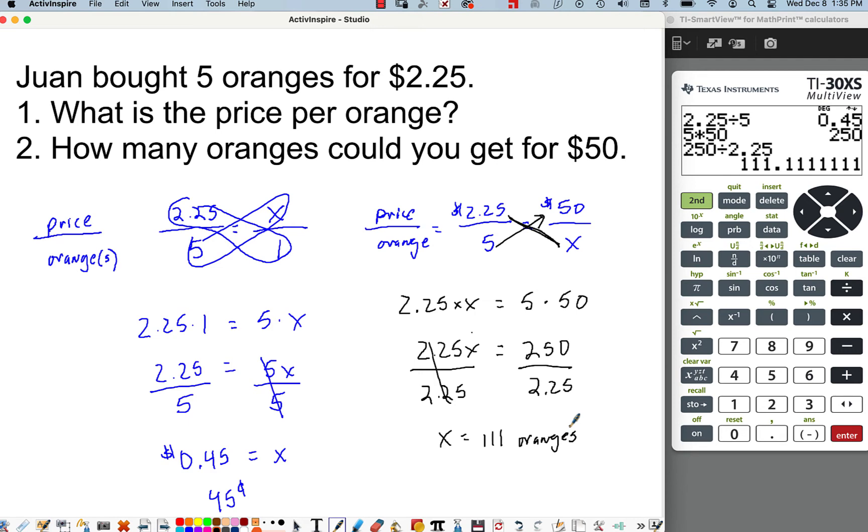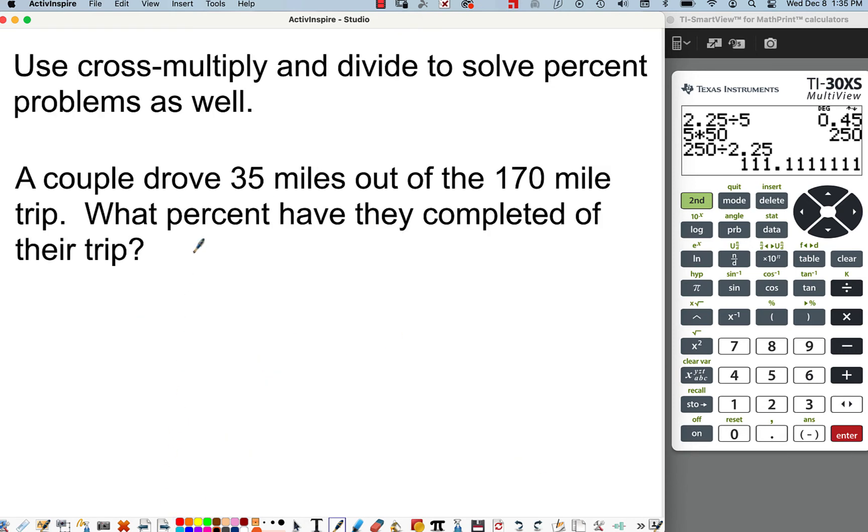So there also can be used for percentages. So use cross multiply and divide to solve percentage problems as well. So let's say a couple drives 35 miles out of the 170 mile trip. What percentage have they completed out of their trip? I just like to show this to show the similarity of why I teach it this way. So again, in this case, we have the part. This is just a basic definition of a fraction. Part over the whole or the total.